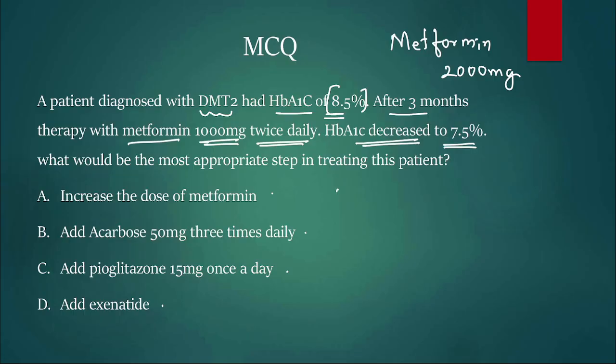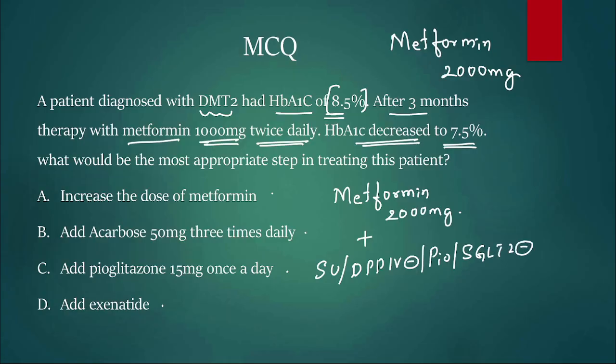Newly diagnosed type 2 diabetes, the drug of choice we all know is metformin. We give metformin because it's an insulin sensitizer, and the maximum dose in a day is 2000mg. Once we give this drug and it's still not being controlled, we can give either sulfonylurea, DPP-4 inhibitors, pioglitazone, or SGLT2 inhibitors - these are the second-line drugs. The patient is already on metformin, so we have to go for a second-line drug.